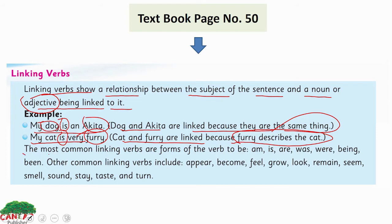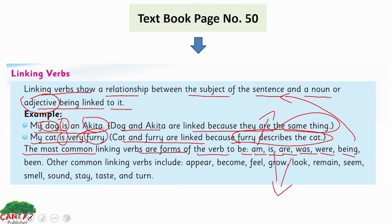The most common linking verbs are forms of the verb 'to be': am, is, are, was, were, being. 'Am' indicates a current state of being. 'Is' and 'are' also indicate the present situation, while 'was' indicates a past situation.